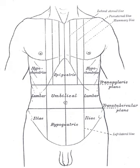The first lumbar vertebra lies at the level of the transpyloric plane. Despite the conus medullaris — the end of the spinal cord — being understood to terminate at the level of the transpyloric plane, there is significant variability. Up to 40% of people have spinal cords ending below the transpyloric plane.